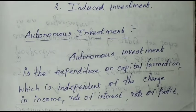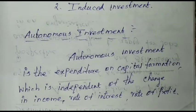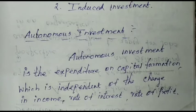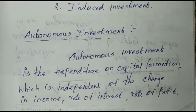Capital formation — we have to make expenditure. Government is there to help people. For example, building a bridge or a road — we have to make expenditure. Government makes that. Autonomous investment is independent of the individual. Which is independent of the change in income.